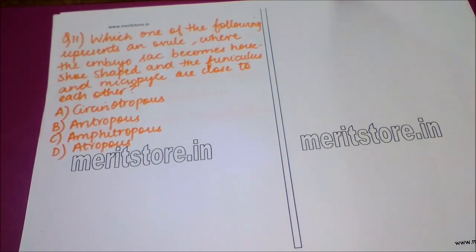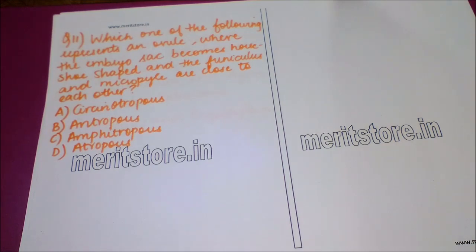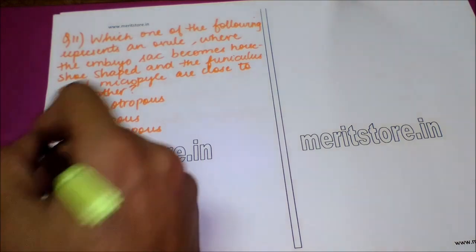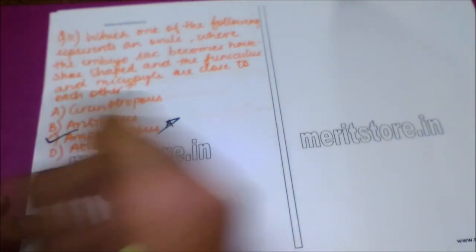The next question is: which type of ovule has the embryo sac becoming horseshoe-shaped and the funiculus and micropyle close to each other? The options are: A — circinotropous, B — orthotropous, C — amphitropous, and D — anatropous. The answer is option C — amphitropous — and this needs to be remembered.